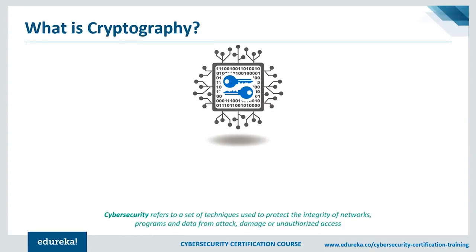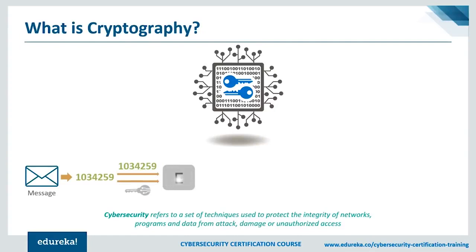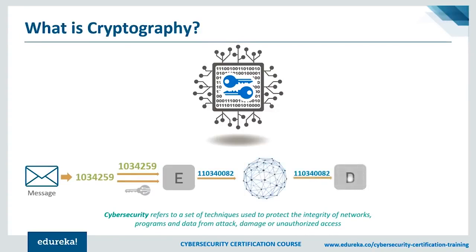Let me explain how that actually happens. First, we have a message. This message is converted into a numeric form, and then this numeric form is applied with a key called an encryption key, which is used in an encryption algorithm. Once the numeric message and the encryption key have been applied in an encryption algorithm, what we get is called a ciphertext. This ciphertext is sent over the network to the other side, where the intended recipient uses a decryption key and the ciphertext as a parameter of a decryption algorithm to recover the original message, or get an error if something went wrong.